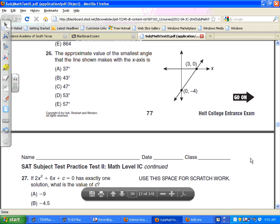Number 26 on the test says the approximate value of the smallest angle that the line shown makes with the x-axis. Okay, you want the line shown with the x-axis.